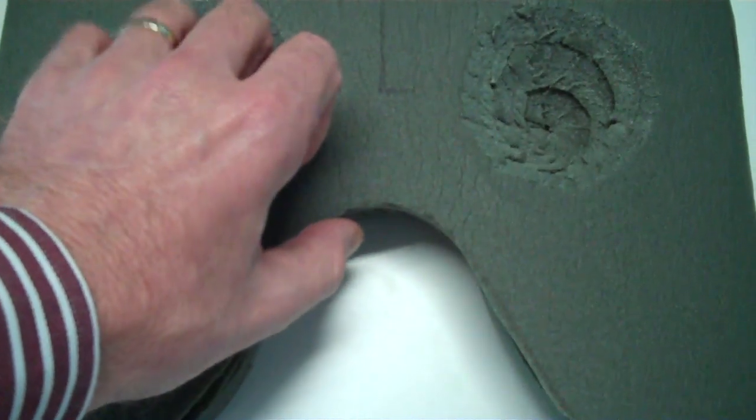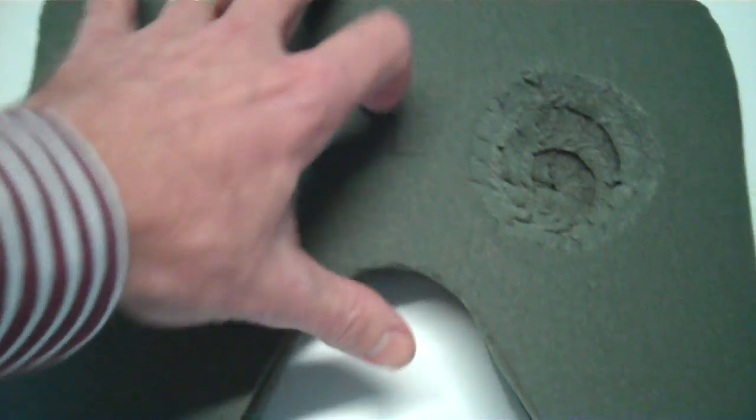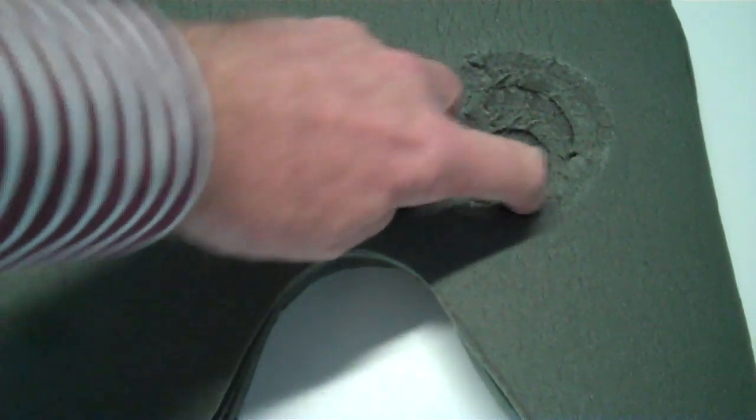And then we do that with the next layer. So again, chamfered layer there. So now we've got these chamfered places for my sitting bones to go down into.